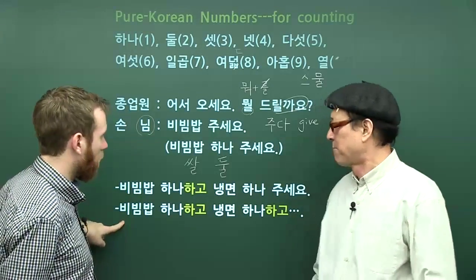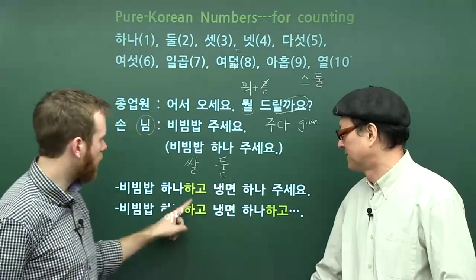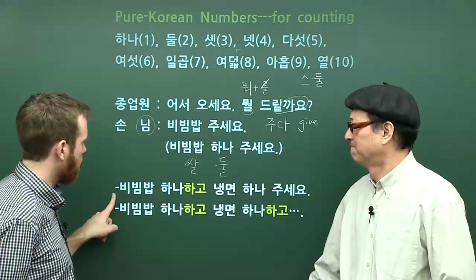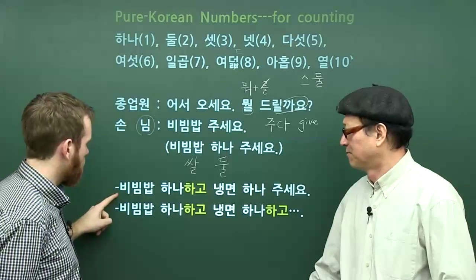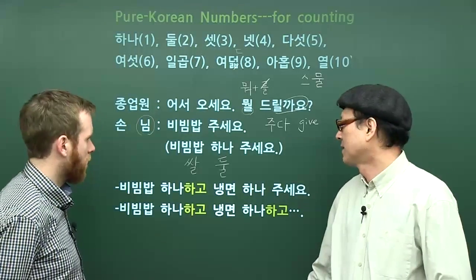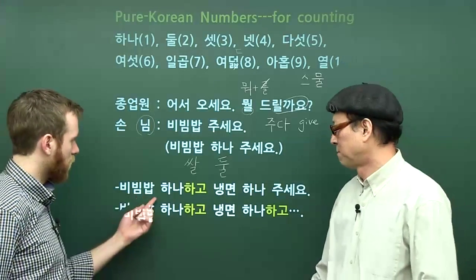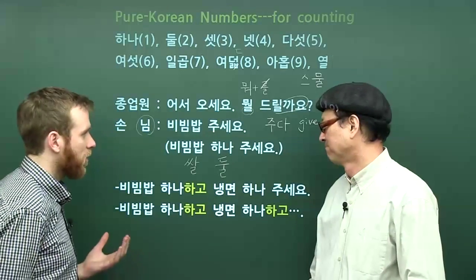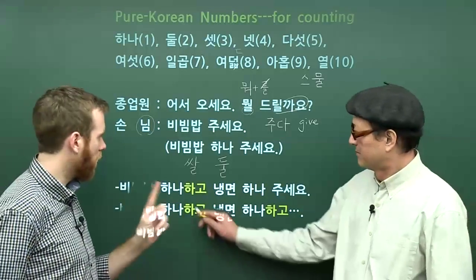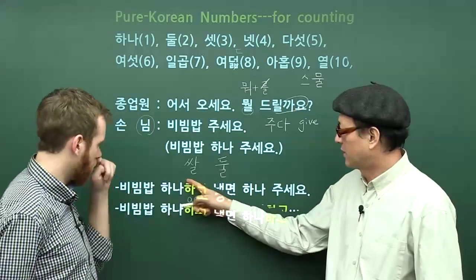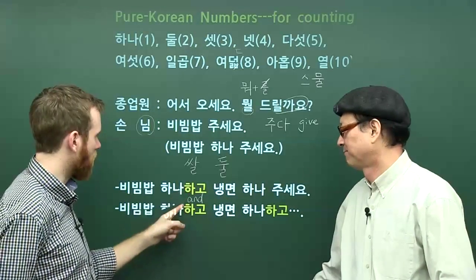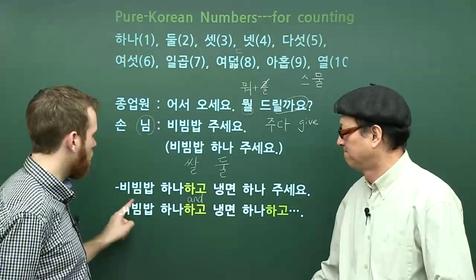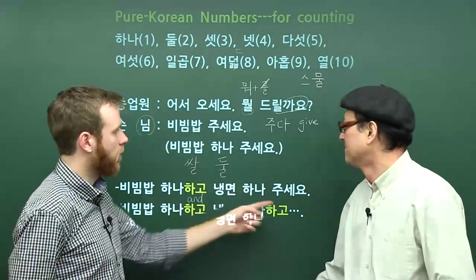We've got some different examples at the bottom. 하고 means 'and.' So I'm ordering more than just bibimbap. The customer says: 비빔밥 하나 하고 냉면 하나 주세요. In this case, the customer is ordering bibimbap and 냉면 — 냉면 is a kind of cold noodle soup, very nice in the summer. 하나 하고 — 'one, and' — is attached, with no spacing. So 비빔밥 하나 하고 냉면 하나 주세요.